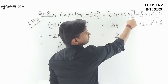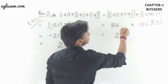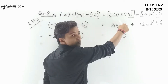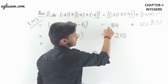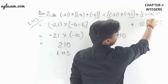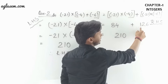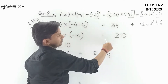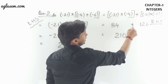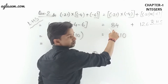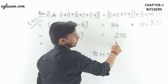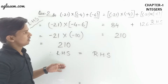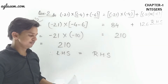Now for the right hand side: (-21) × (-4) = 84, positive because minus times minus makes plus. And (-21) × (-6) = 126, positive for the same reason. Adding both: 84 + 126 = 210. It is proved that left hand side equals right hand side. This was all for question number 2.